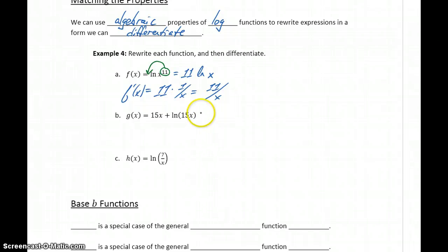In part b, the first term is fine. We know how to differentiate 15x, but we can't differentiate the natural log of 15x. All we have is a property for the natural log of just x by itself.